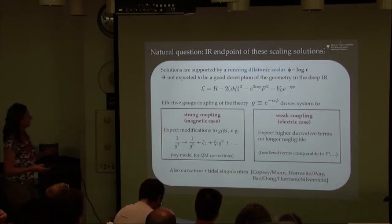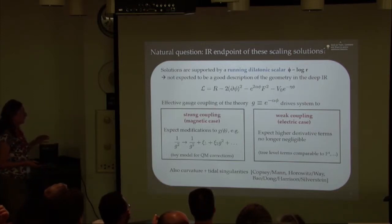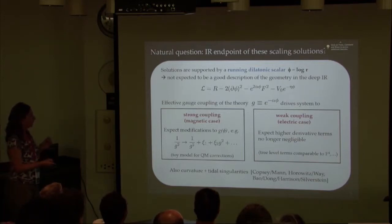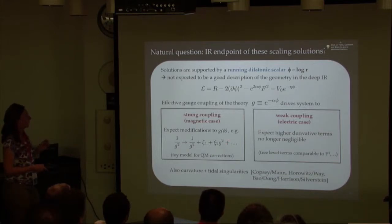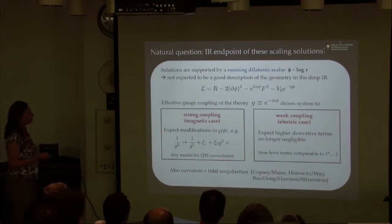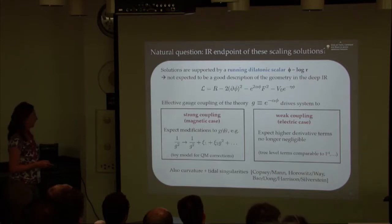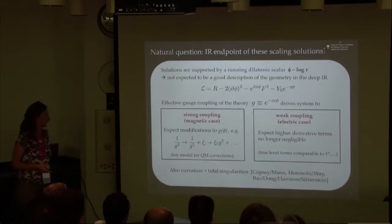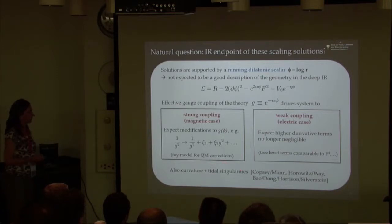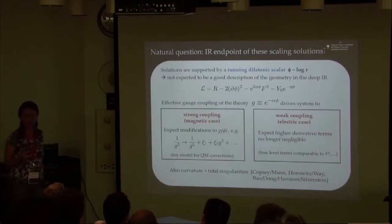This is an indication that the scaling solutions to this theory are not going to be valid necessarily as you move towards the deep infrared. You expect them to be modified. There are different arguments for why you expect this. In the strongly coupled case, you would expect to find quantum corrections to the scaling. In the weak coupling case, you would expect higher derivative terms to start to be as important as the kinetic term F squared.